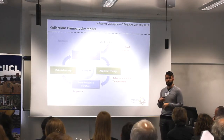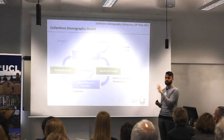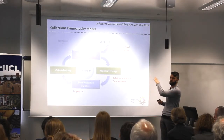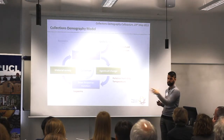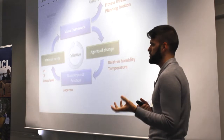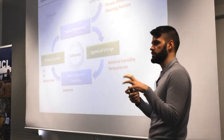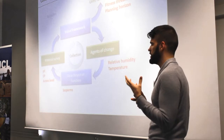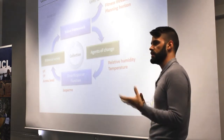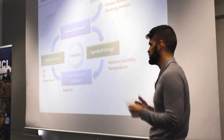The dose response function is the big complicated function of material presented, and the isoperms that come through that, and the material science behind this stands respectively to the subjectivity of the public's opinion — or our opinion — of how things should last and look. The material survey includes some of the variables of the model: the pH, the degree of depolymerization, and the access level. As Mathias said, we have for the National Archives statistics of access level, and we can spread that over the number of records that we hold, or examine it in more depth for individual parts of the collection. You can say: my collection is accessed once a year, twice a year, or whichever number you choose.